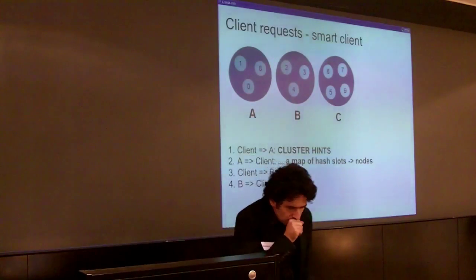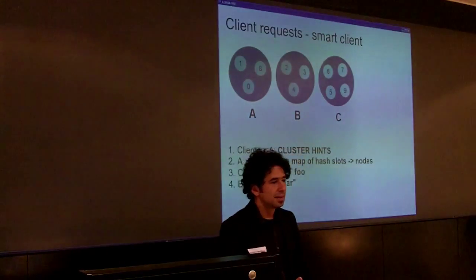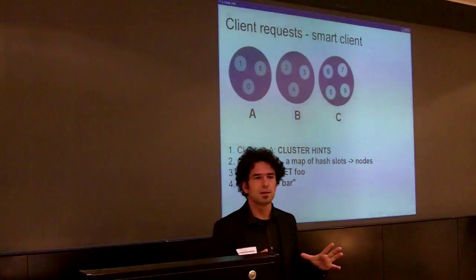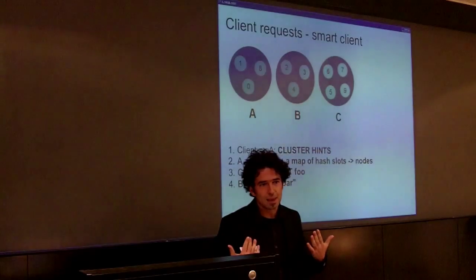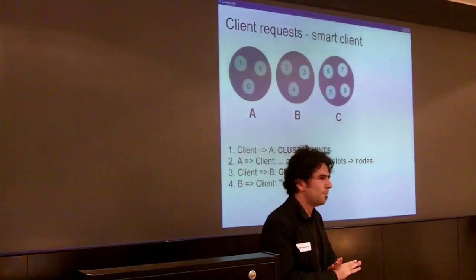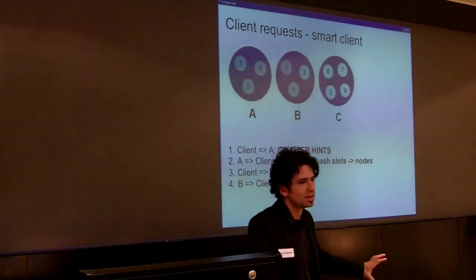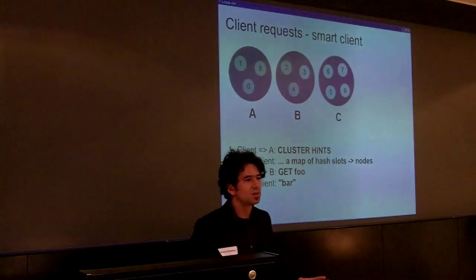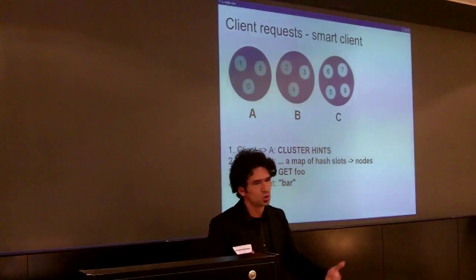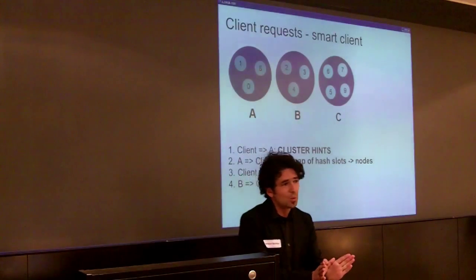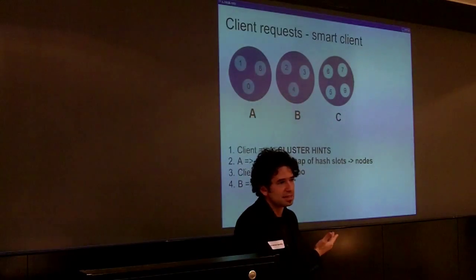Smart clients do things differently. They try to take persistent connections with nodes. At startup, they ask for cluster hints — the current configuration. When they get a MOVED message, they update their in-memory routing table. So a smart client will, most of the time, directly address the right node. This should sound like horizontal scalability — completely horizontal scalable, with every node connected to every node, every client to every node. It's up to the client how many persistent connections to maintain, but it will directly address the right node. Performance and latency will be equivalent to a single Redis instance.